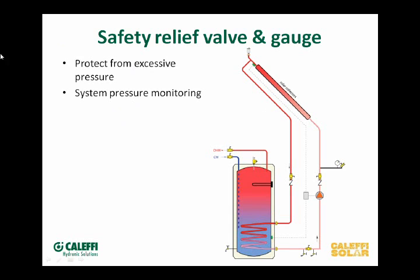We have new Grundfos sensors that monitor pressure and can go right in the piping — little vortex sensors that measure temperature and pressure. On a commercial system, you want to know if there's been a loss of fluid, and you want to shut it off if there's a big pump on there — you don't want to run it dry. Those pressure sensors can either give you an alarm or drop the system off when the pressure drops to a certain point. We've got both flow and pressure sensors available in our catalog.